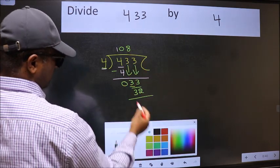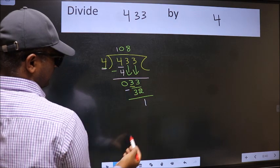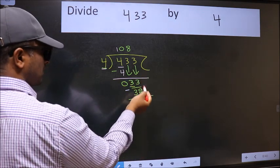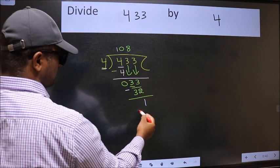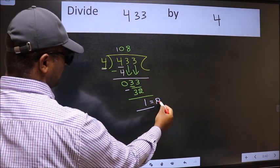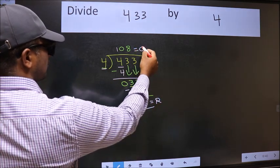Now we should subtract. We get 1. No more numbers to bring it down. So we stop here. This is our remainder and this is our quotient.